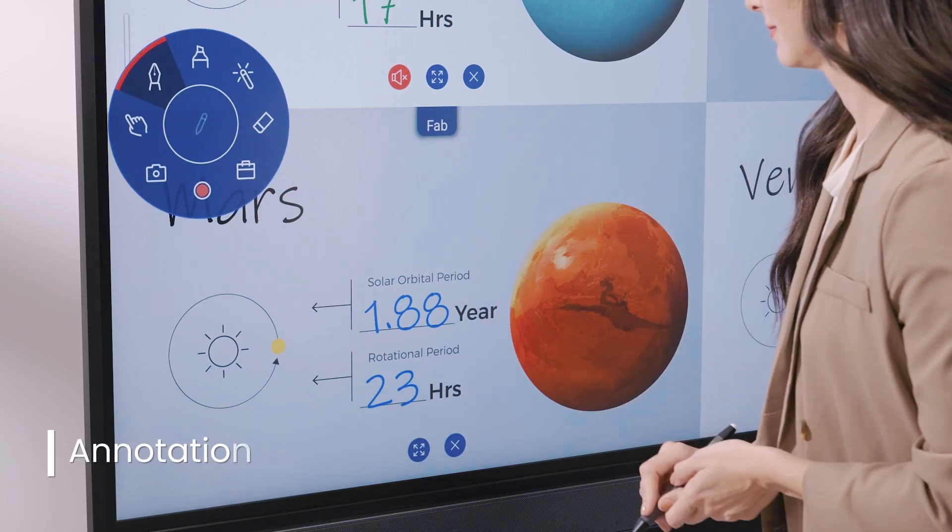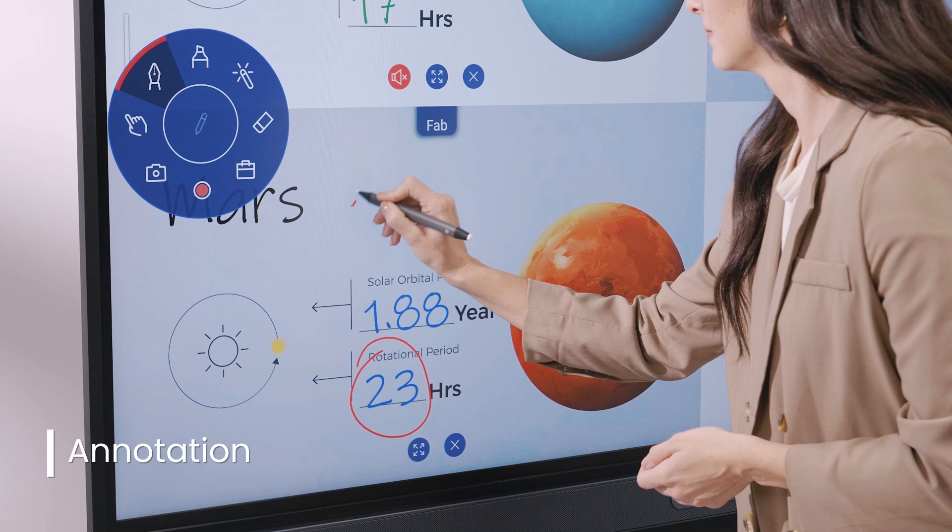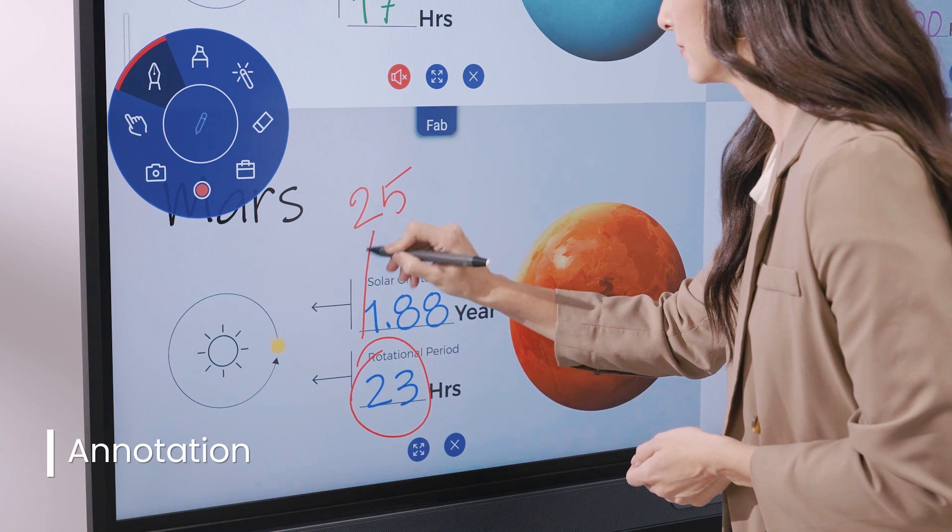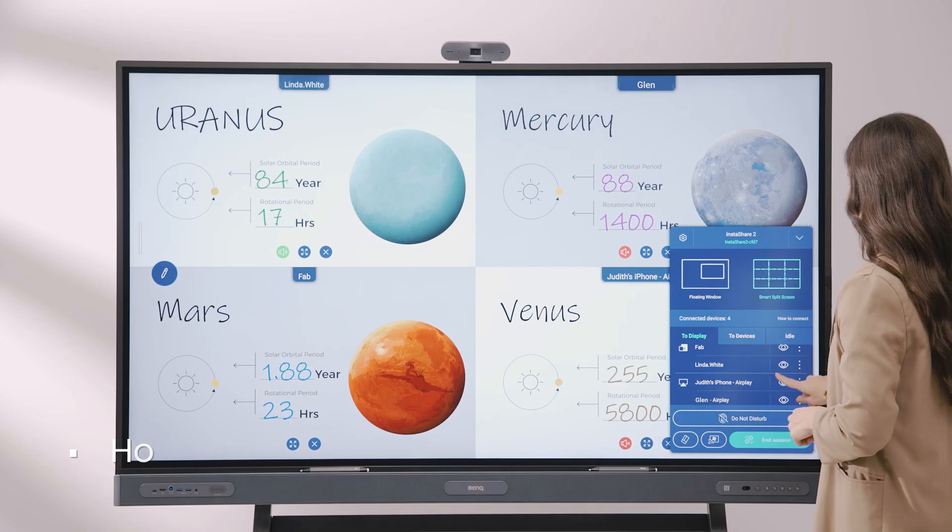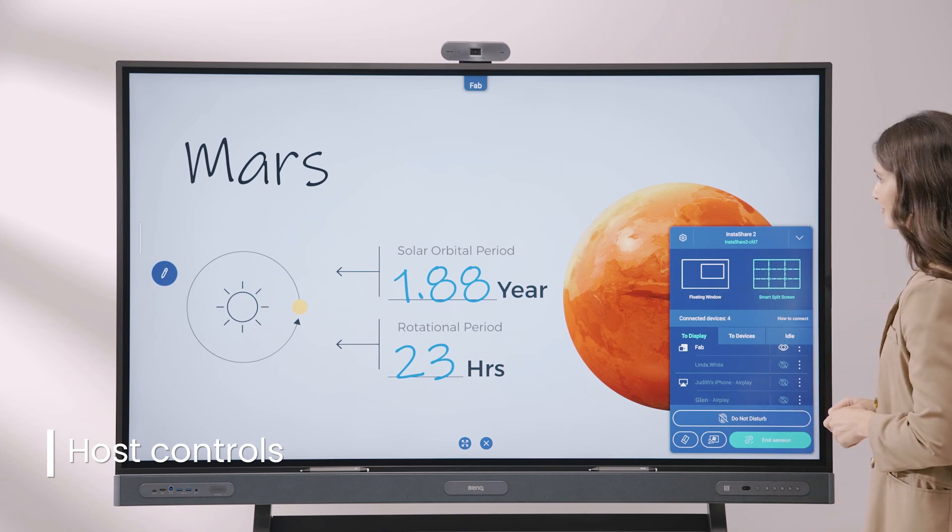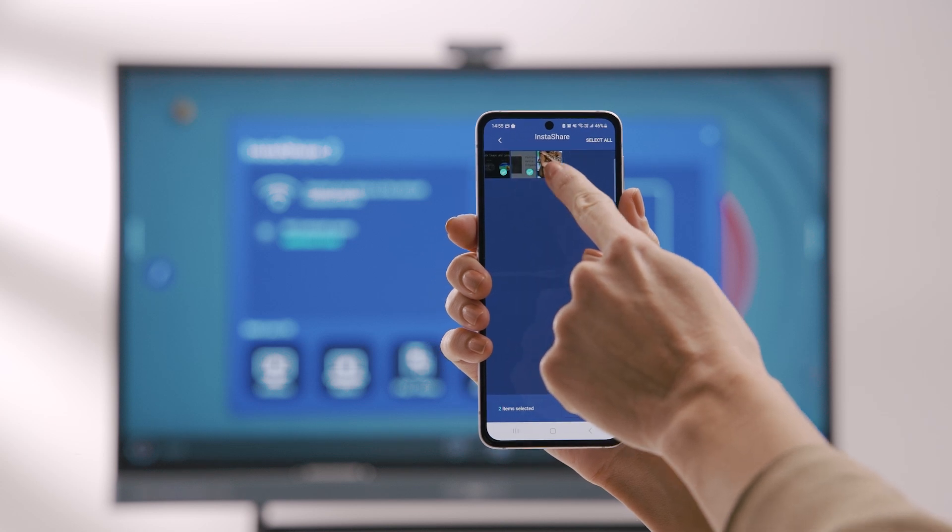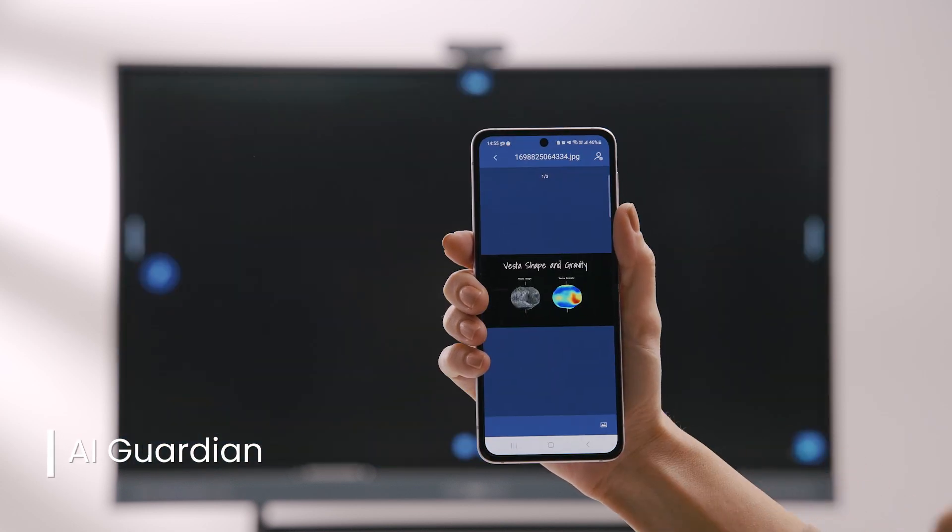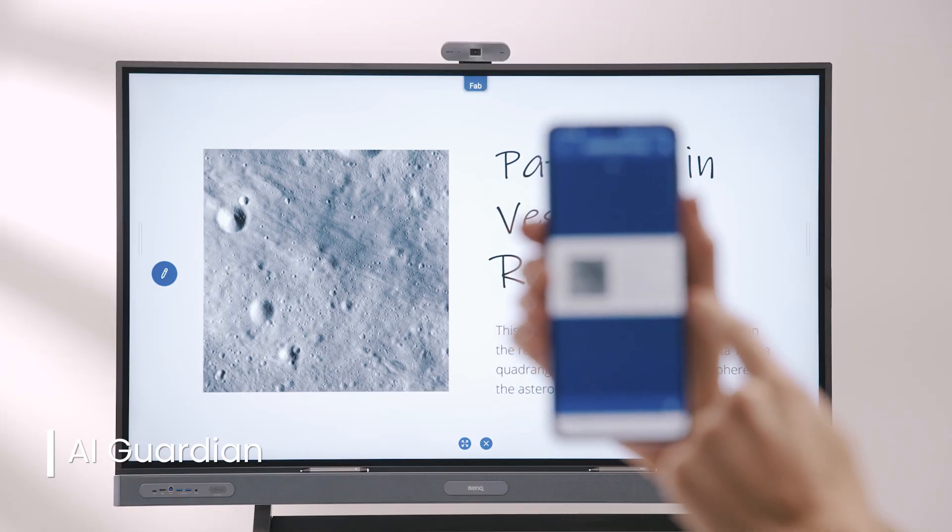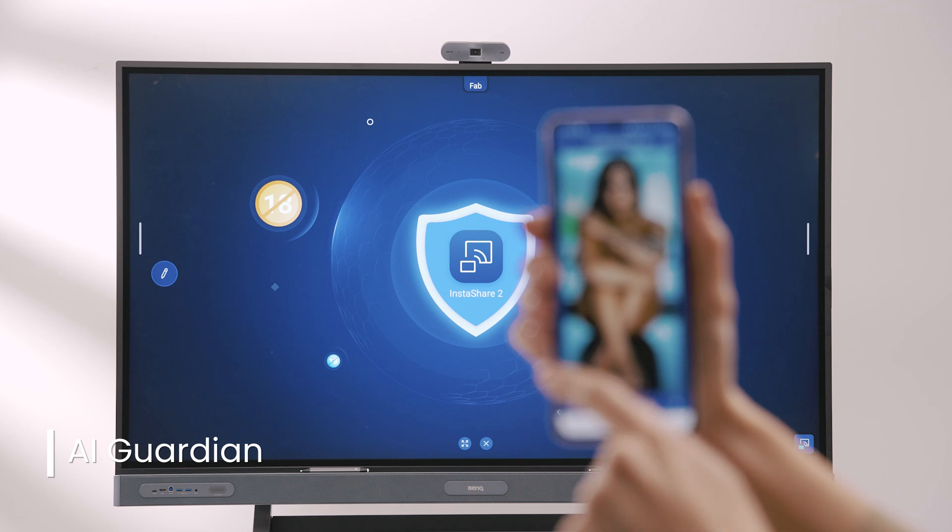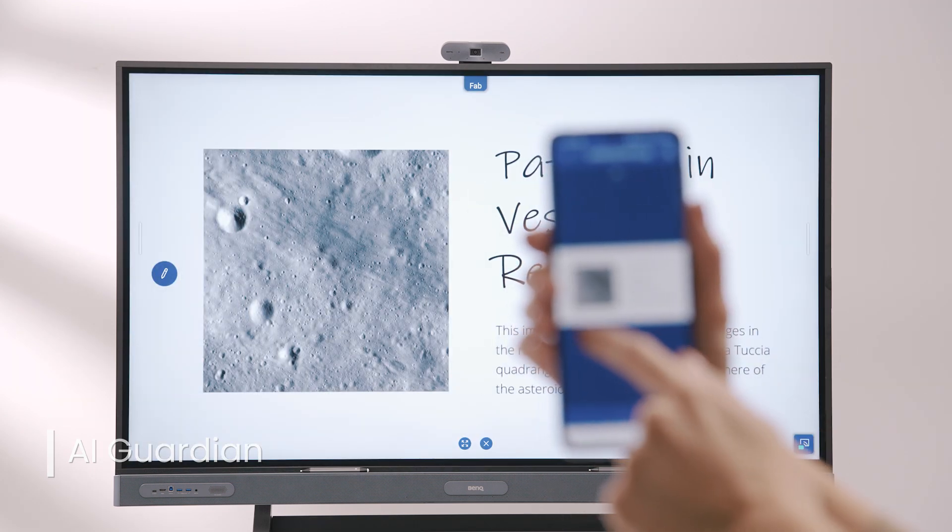With InstaShare, you can take notes over shared content and you get complete control over the session with our intuitive UI. Show or hide a student's screen, and even activate the Do Not Disturb mode to prevent disruptions. To ensure a safer classroom experience, InstaShare 2 features an AI content moderator that automatically blocks casting of inappropriate content to the board.